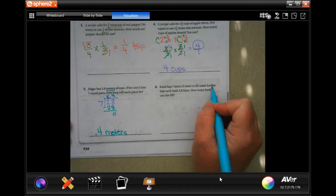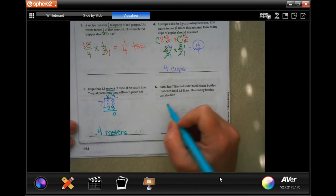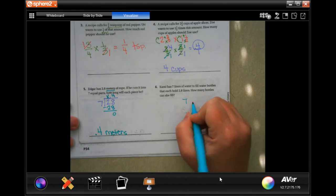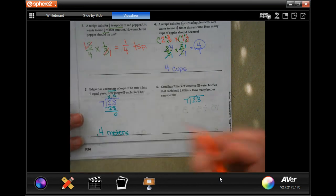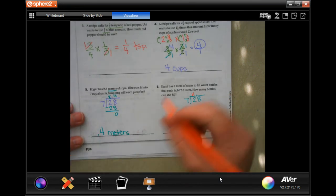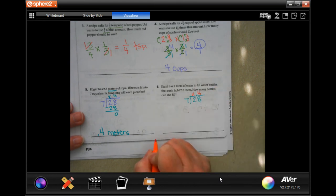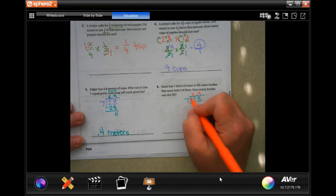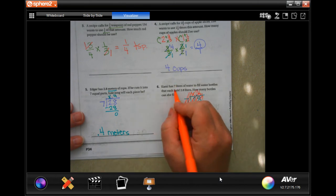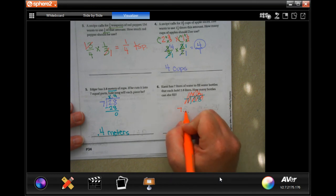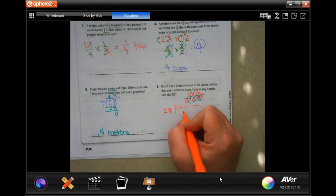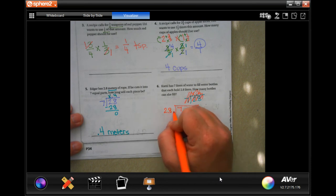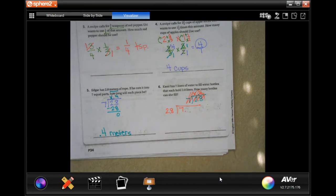Tammy has 7 liters of water to fill water bottles that each hold 2.8 liters. How many bottles can she fill? So, 7 into 2.8? Bring that decimal straight up. All right? 7 is not going to go into 2, but just like over here. Oh, you know what? Let's do this backwards. So, yep. I sure did.